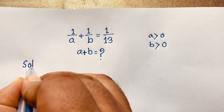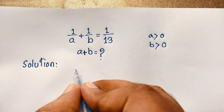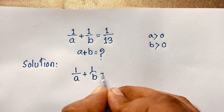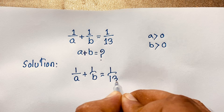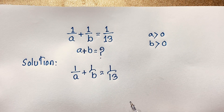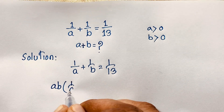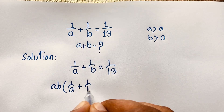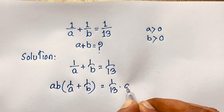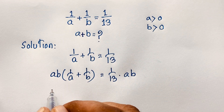We have 1 over a plus 1 over b is equal to 1 over 13. Now I multiply both sides by ab, so it will be ab times 1 over a plus 1 over b is equal to 1 over 13 times ab.